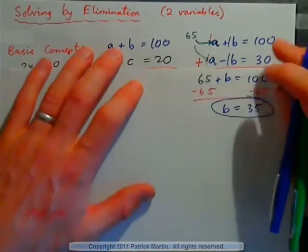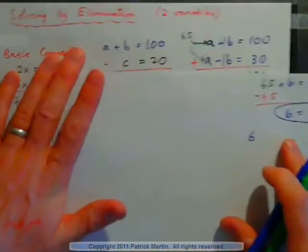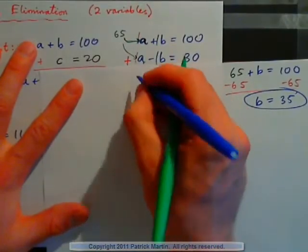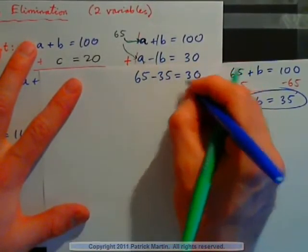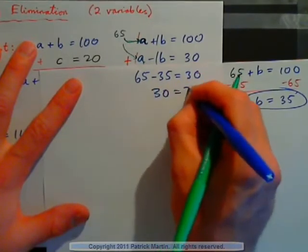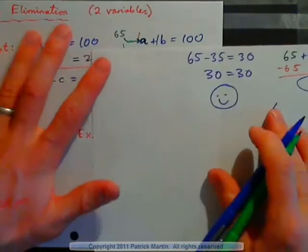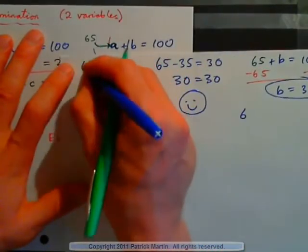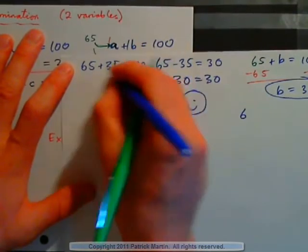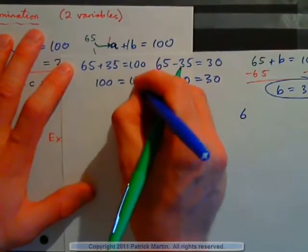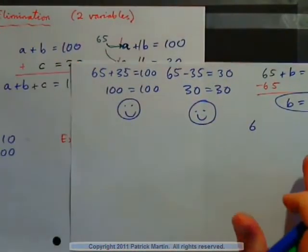I can check it. Apple minus banana should be 30: 65 minus 35 equals 30, and that is true — 30 equals 30. So it all works out. And of course it should work in the other equation also: 65 plus 35 should give 100, and that is indeed 100. So it works in both equations. We've checked our answer.